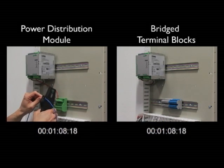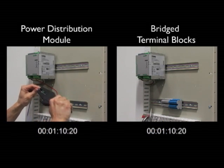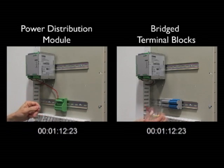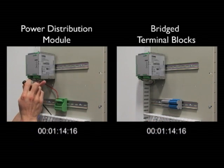Now that the installer using the power distribution module has connected the positive 24 volt wire, preparation then begins on the return signal.